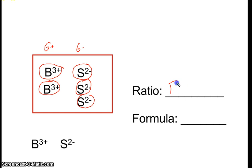And now when we count, we got three pluses, three pluses, we got six pluses. And on this side we got six minuses. So when we do our ratio, you can see we've got two borons—we got two to three. So our formula is going to be B2S3.